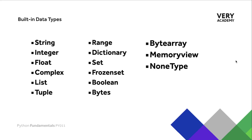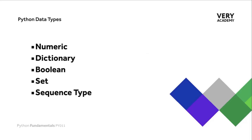This isn't actually the whole list, because in fact we can also build our own data types. These are just the built-in data types — Python comes with a set of data types which saves us time. These data types can be categorized into: numeric, dictionary, boolean (true or false), set, and sequence types. A sequence type might in fact be a string.